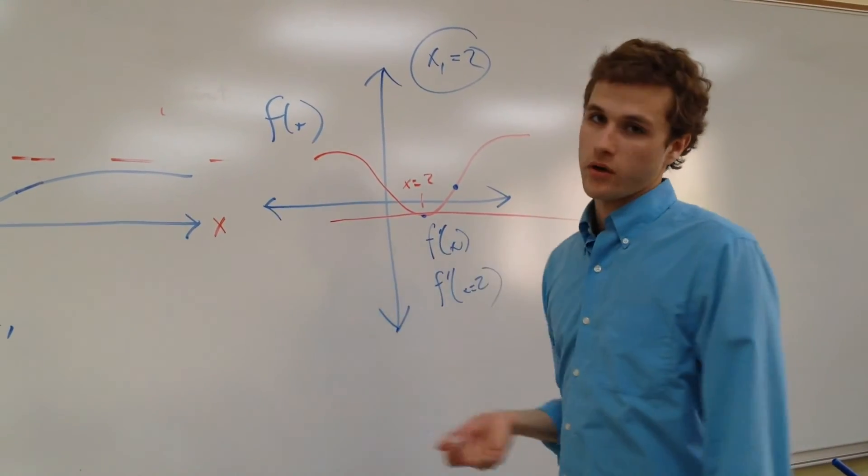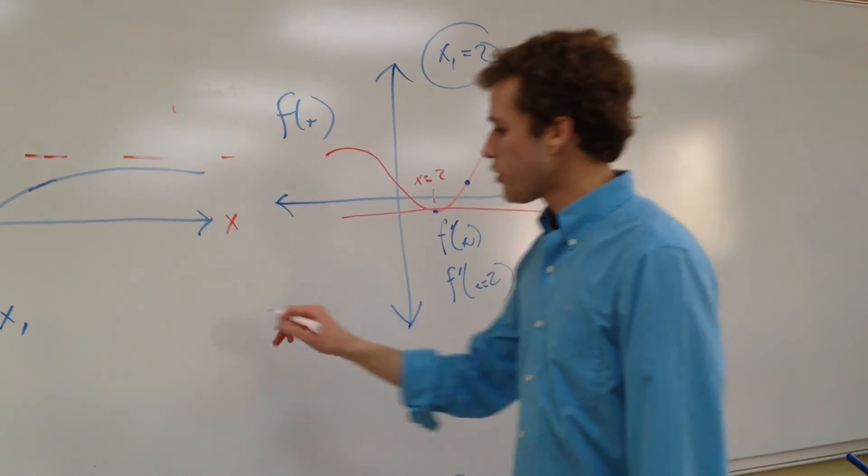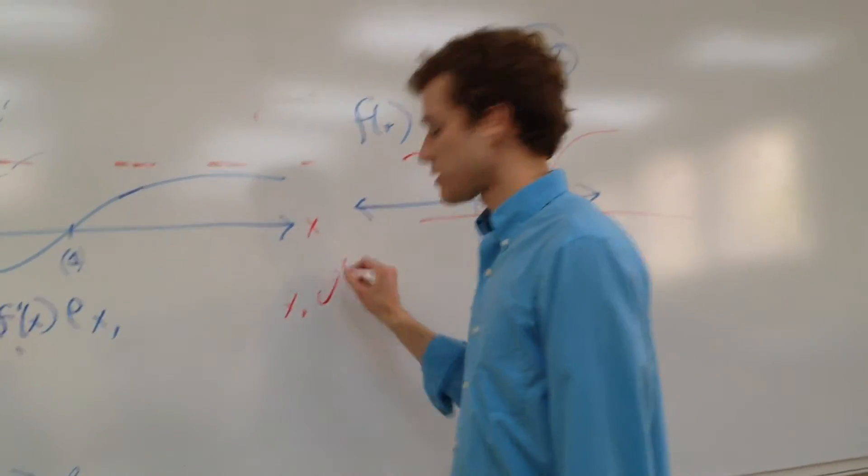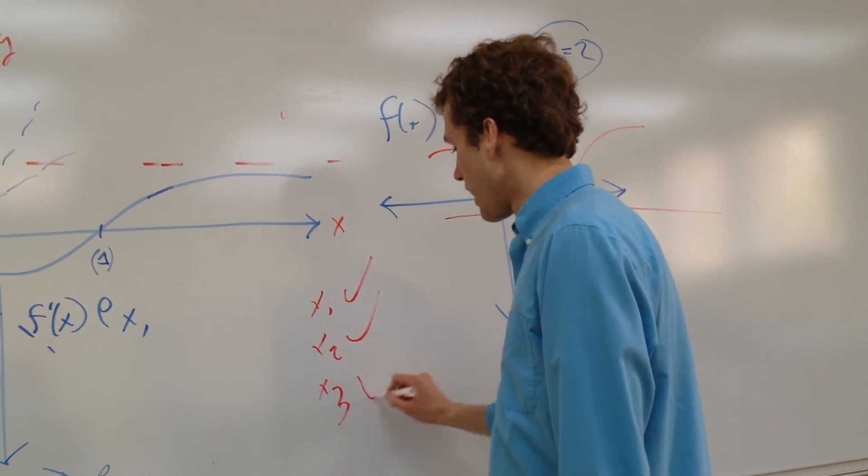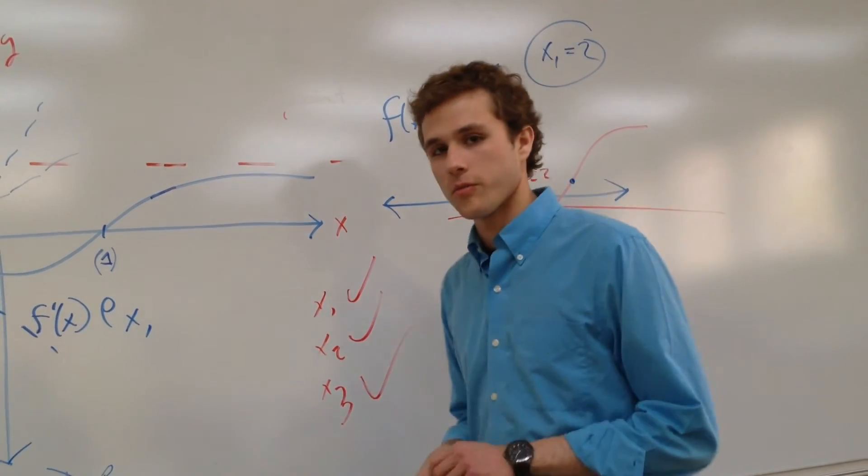So this is where Newton's method will fail. If your x1 is successful, and your x2 is successful, and your x3 is successful, and you're getting closer and closer to your point, you will most likely end up getting really close to your point.